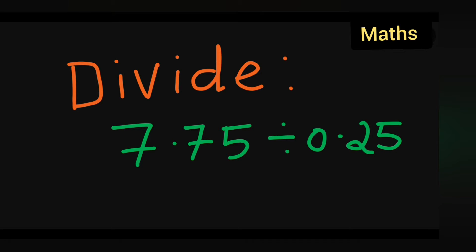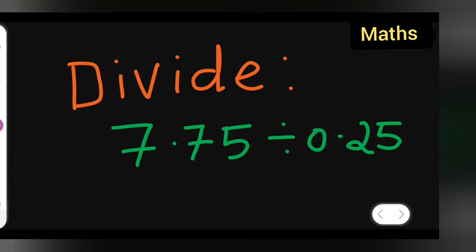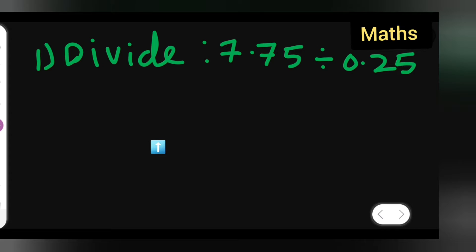For today's class of mathematics, let us see how to divide. Today's question is how to divide 7.75 divided by 0.25. Now here you have numbers with a decimal point, and many of you find it difficult to divide, especially when you have a decimal point in between the numbers.